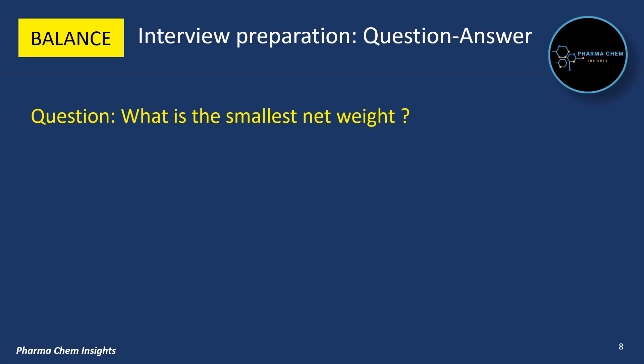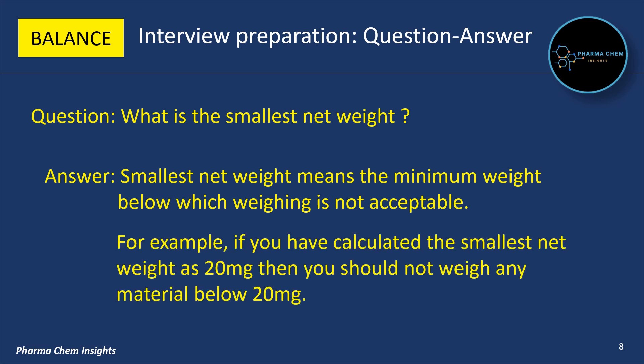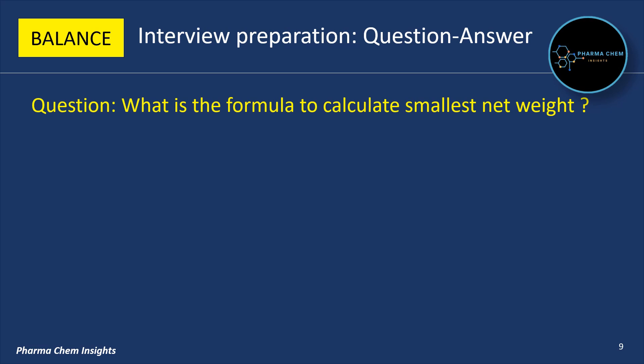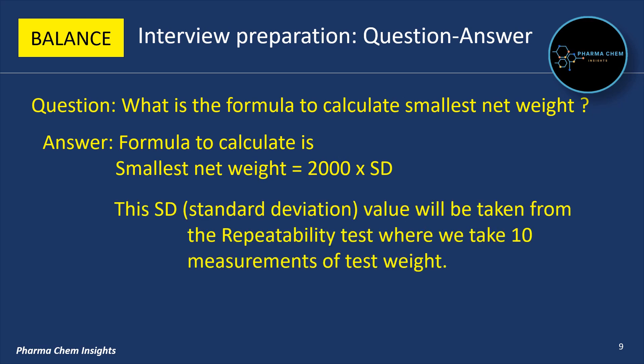Next question: what is the smallest net weight? Smallest net weight means the minimum weight below which weighing is not acceptable. For example, if the smallest net weight is calculated as 20 mg, then you should not weigh any material below 20 mg. The formula to calculate smallest net weight is: SNW = 2000 × SD, where the SD value is taken from the repeatability test in which 10 measurements of the test weight are taken.